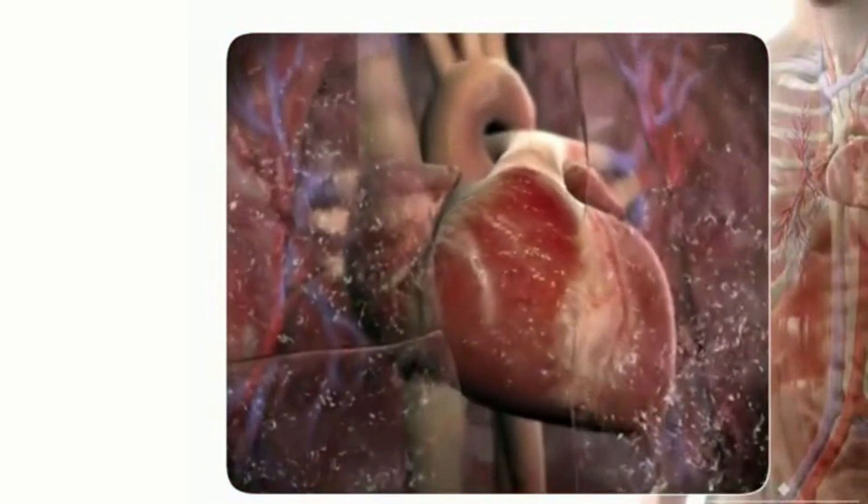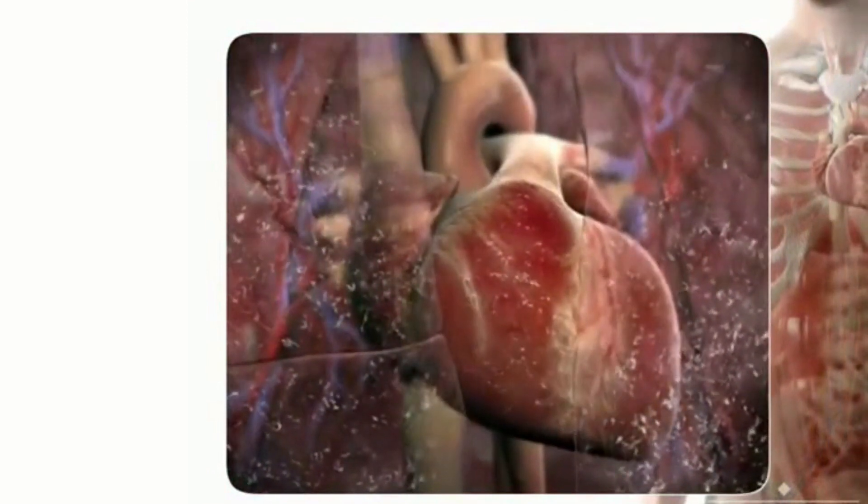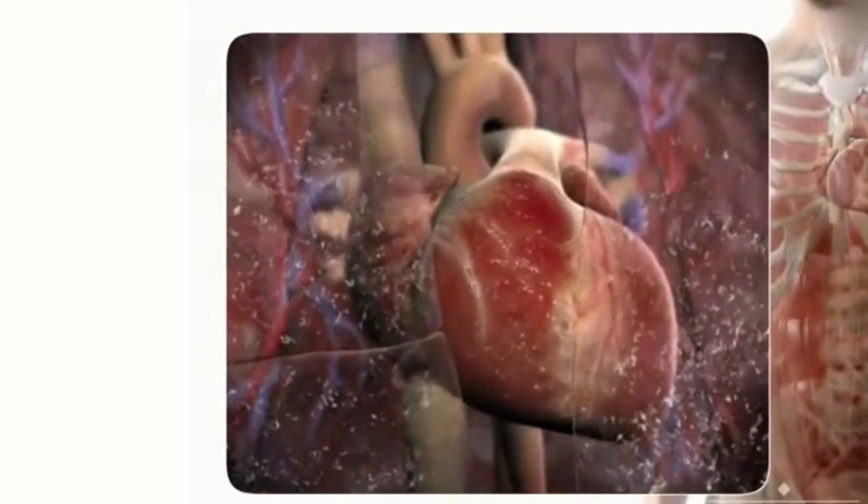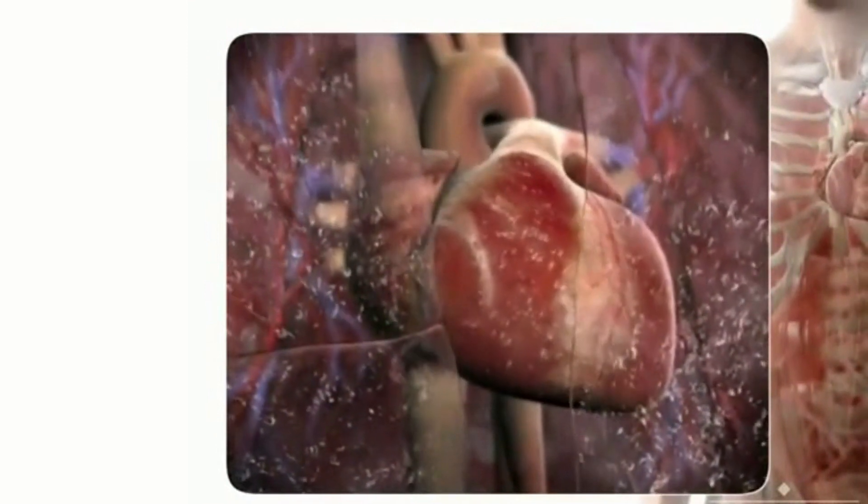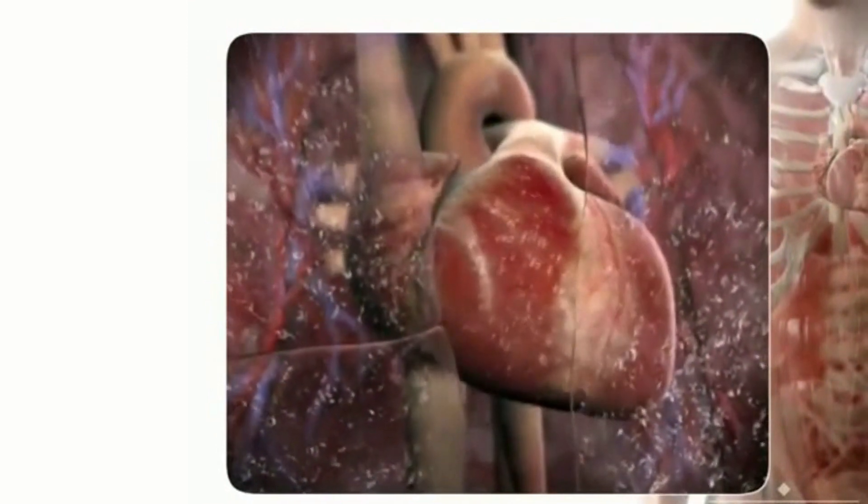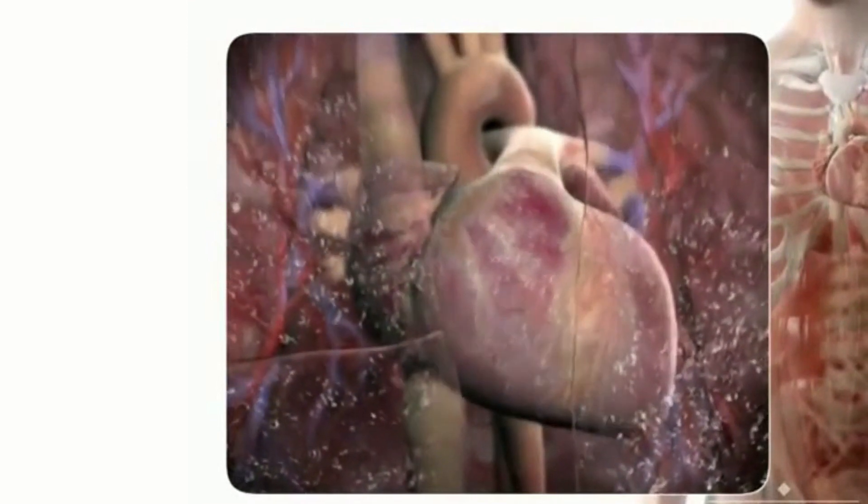While vasoconstriction helps to keep blood pressure in check, it can also have unfavorable consequences. The weakened heart, for example, must pump harder against higher resistance in the systemic arteries, while narrowing of the coronary arteries further limits oxygen flow to the myocardium.